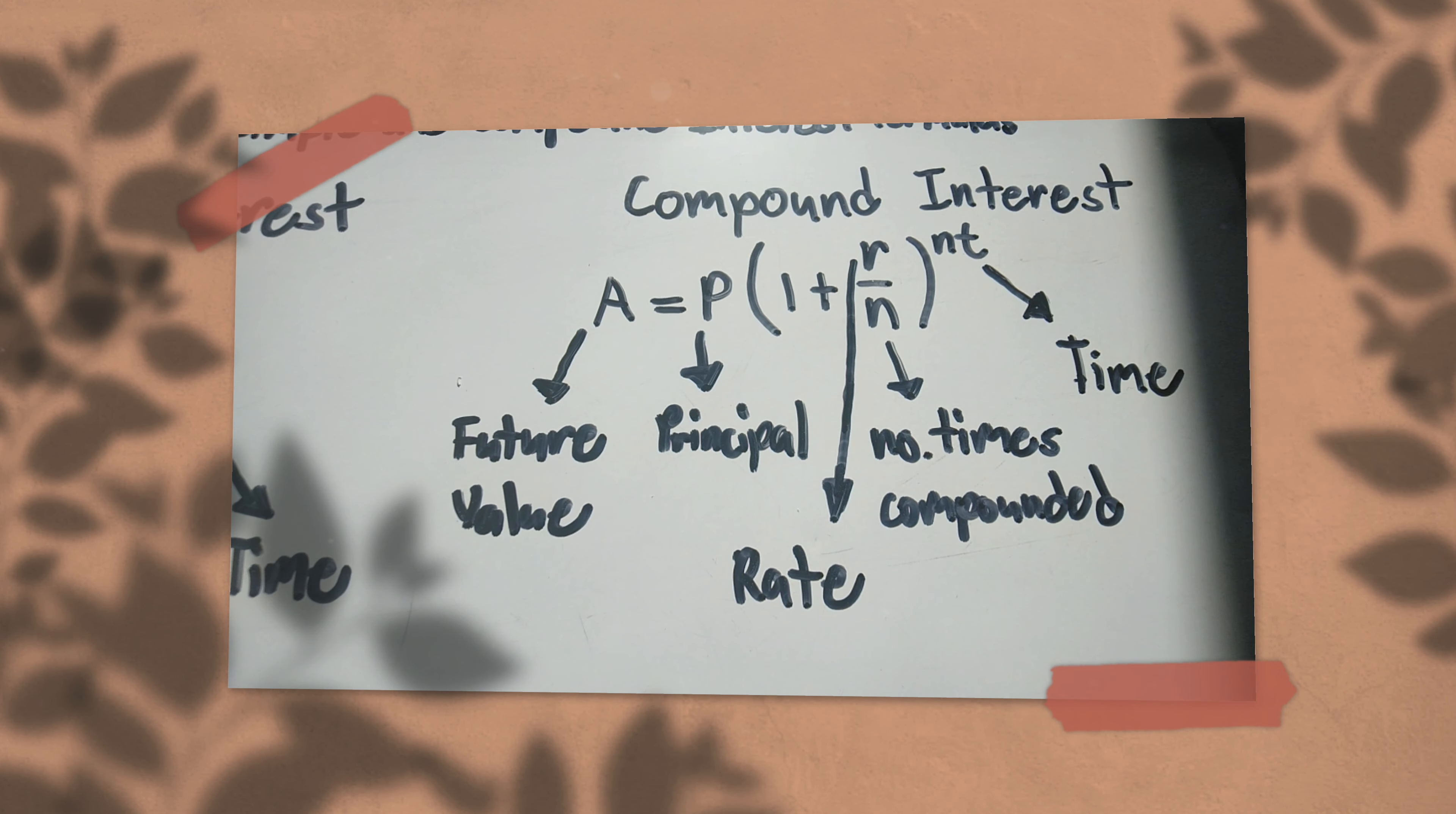It could be annually. If annually, the denominator becomes 1. If semi-annually, it becomes 2. If quarterly, it becomes 4.